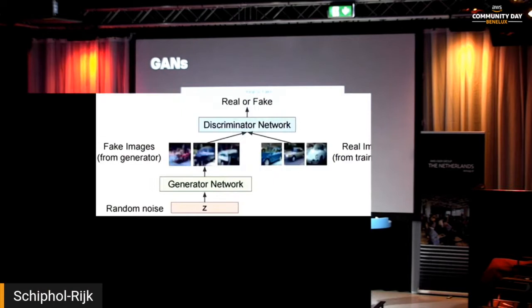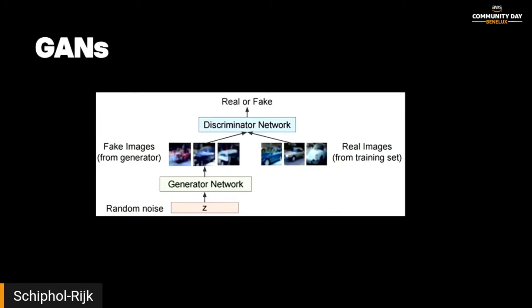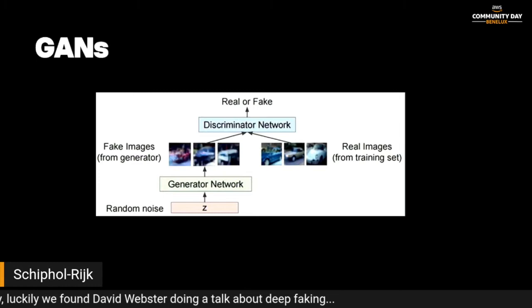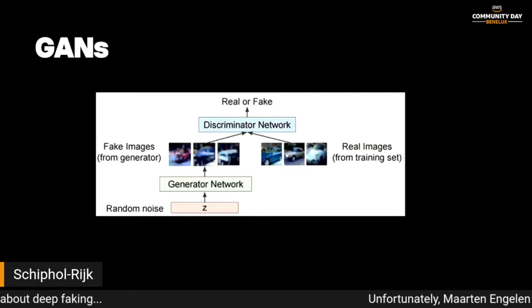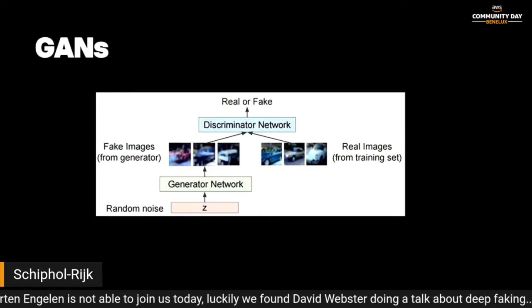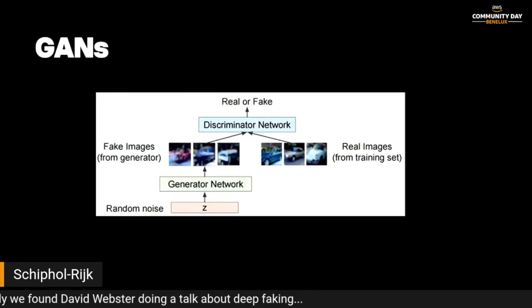Then there are GANs — Generative Adversarial Networks — which actually create images. If you've seen those pictures on Nvidia of human faces that don't exist, they're using a GAN. Most GANs consist of two networks: one generates images and another is the discriminator. These two keep testing to see if the images match the ones in your dataset. When the discriminator can no longer tell the difference between fake and real images, you've got amazing generated pictures.